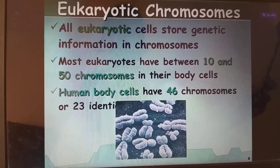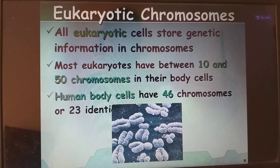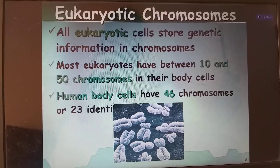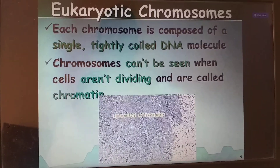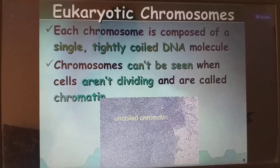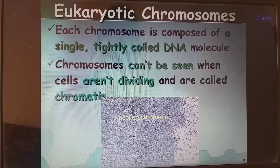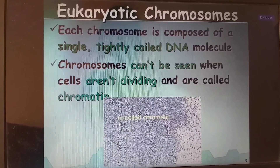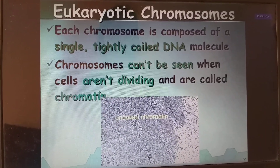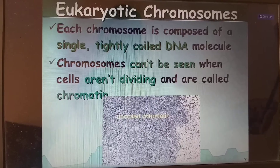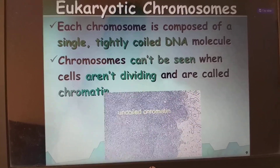Eukaryotic chromosomes: all eukaryotic cells store genetic information in chromosomes. Most eukaryotes have between 10 and 50 chromosomes in their body cells. For example, the human body has 46 chromosomes. Each chromosome is composed of a single tightly coiled DNA molecule. Chromosomes cannot be seen when cells aren't dividing — during that time we call it chromatin material. If coiling increases, we call it chromosomes.